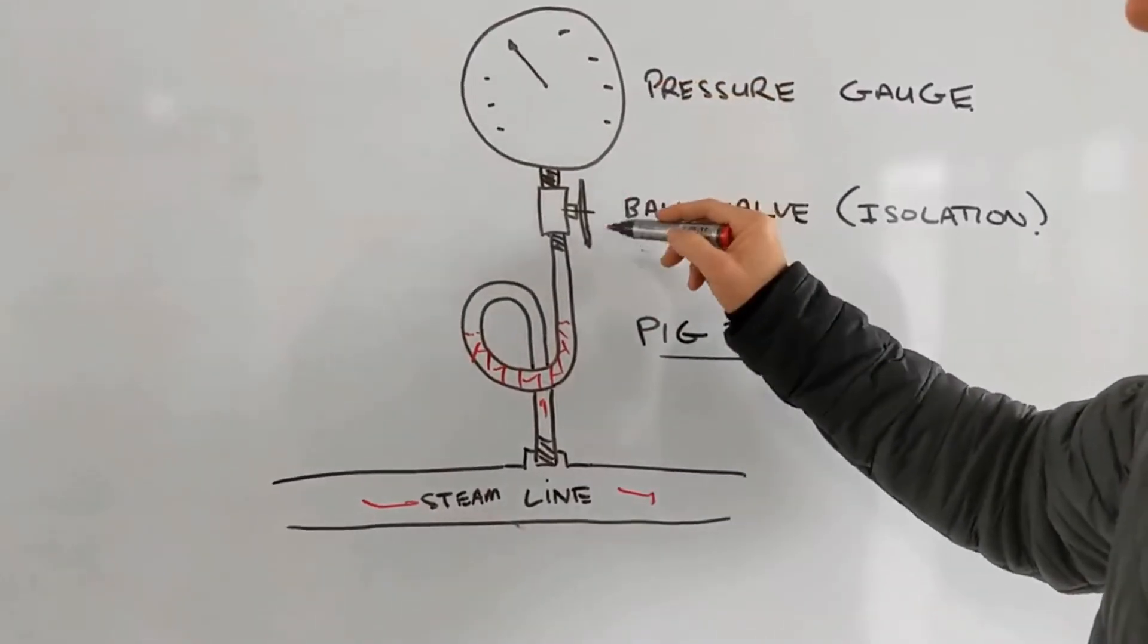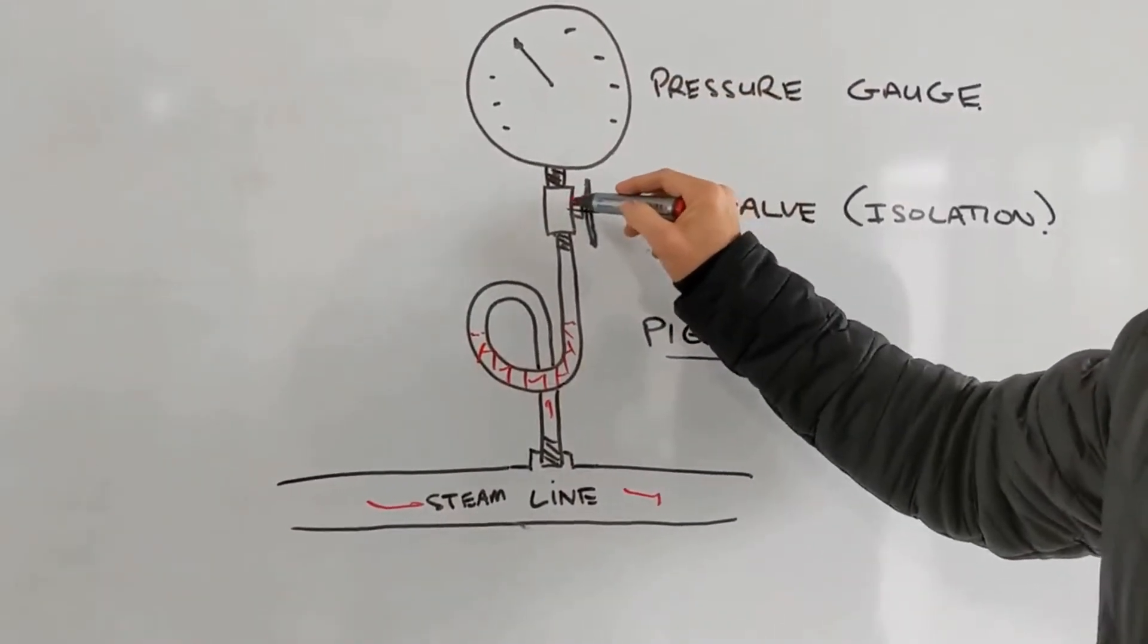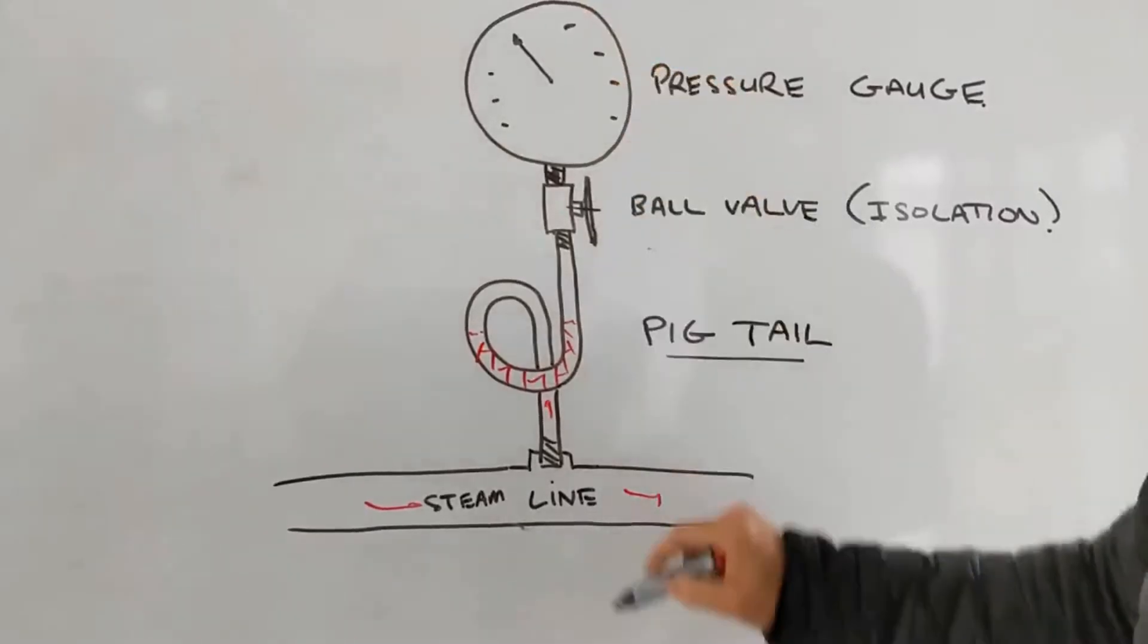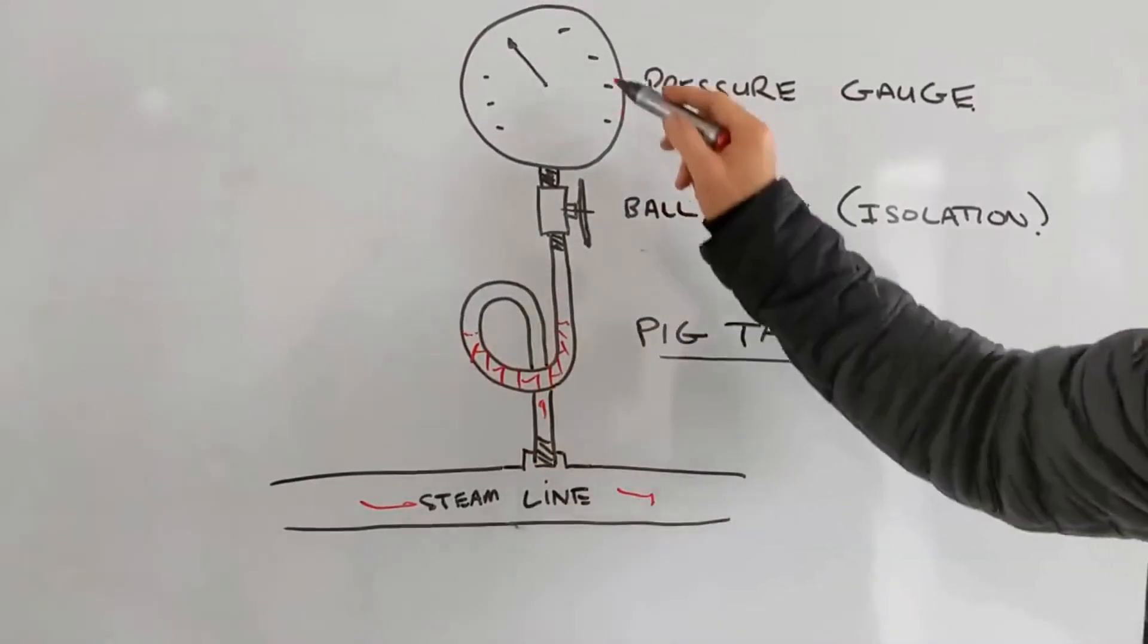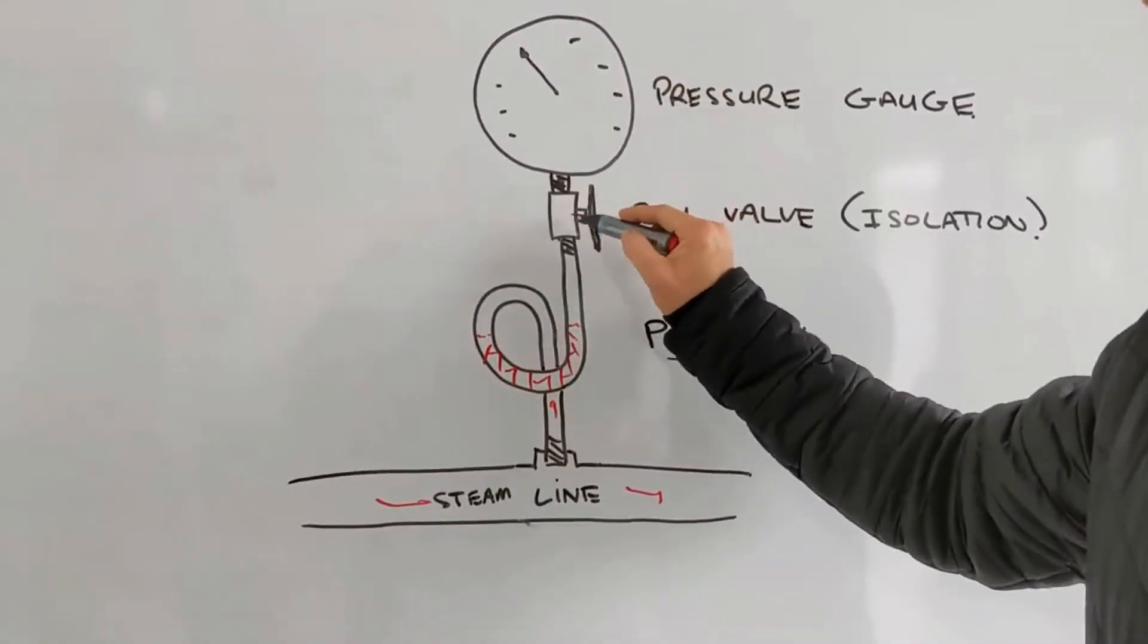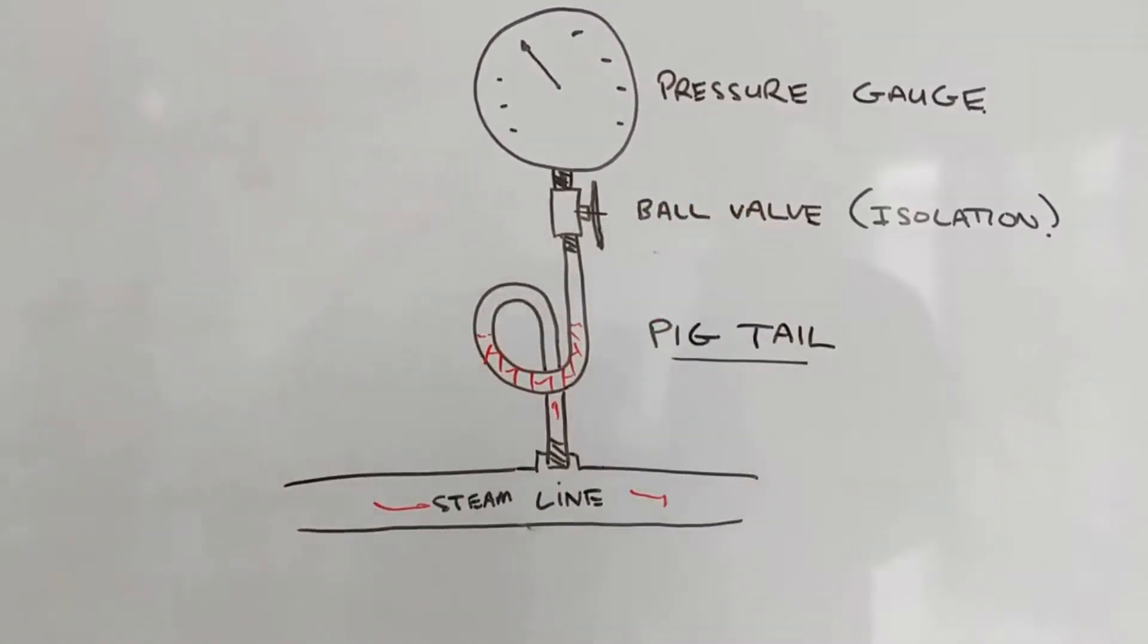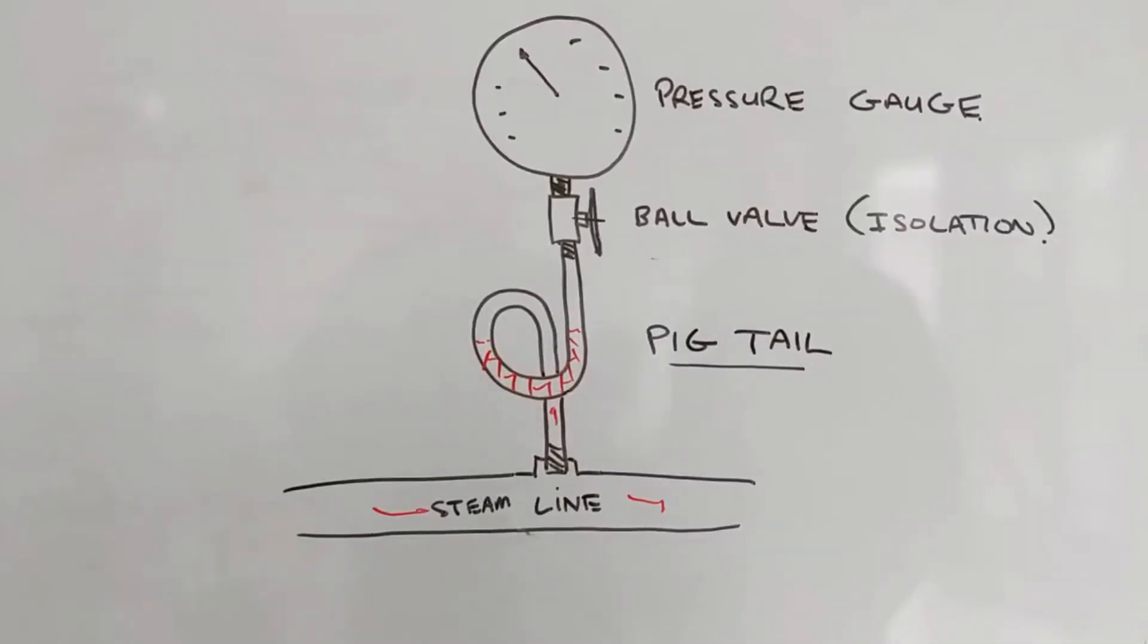You can isolate the ball valve, take your gauge out, and then you're not having to close your main line. You'll have steam going to atmosphere stopped here at this isolation ball valve. Any questions?